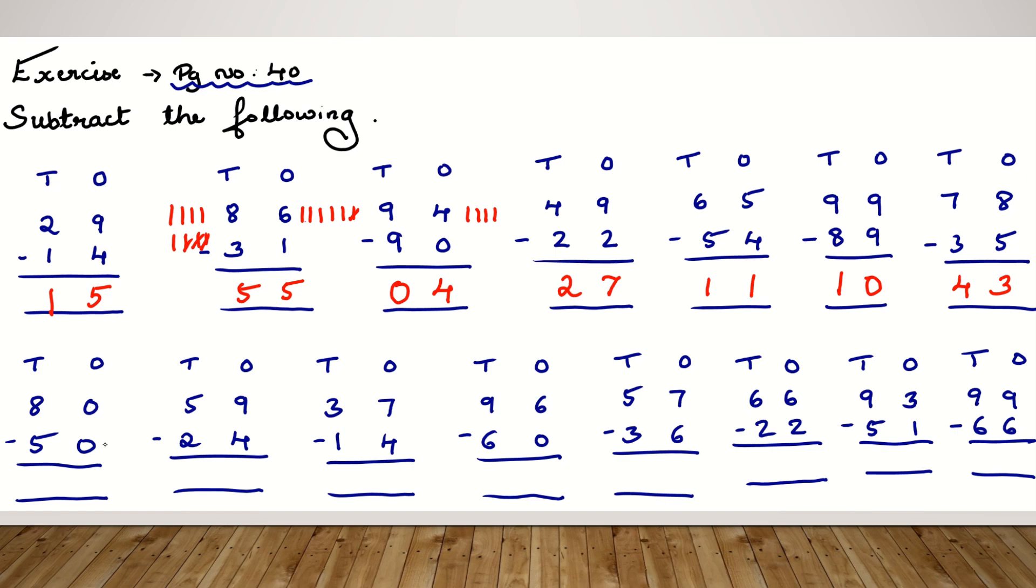Moving to the next question. 80 minus 50. 0 minus 0, the answer is 0. 8 minus 5, you get 3. So we have the answer 30.